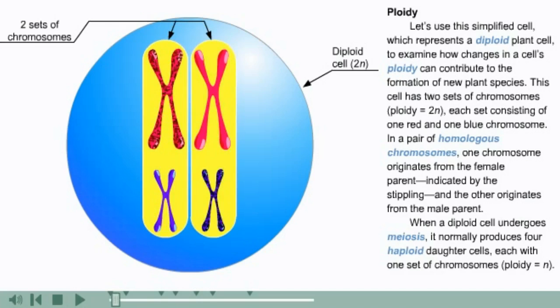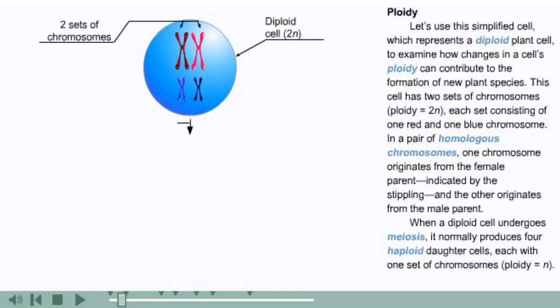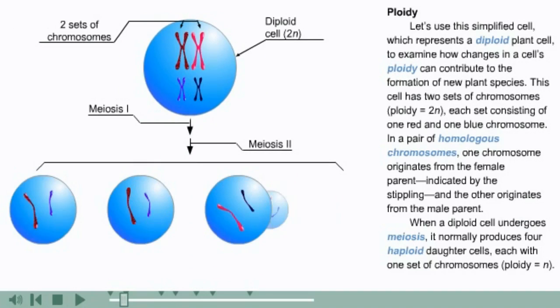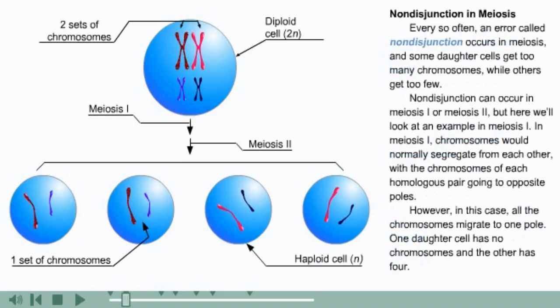Each set consists of one red and one blue chromosome. In a pair of homologous chromosomes, one chromosome originates from the female parent, indicated by the stippling, and the other originates from the male parent. When a diploid cell undergoes meiosis, it normally produces four haploid daughter cells, each with one set of chromosomes, or a ploidy equaling n.